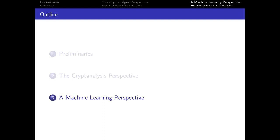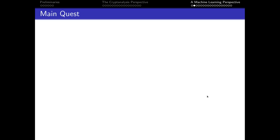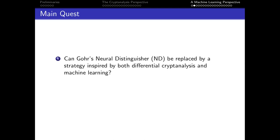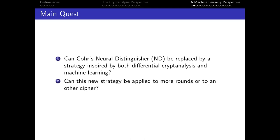Welcome to the second part of the presentation, in which we will focus on exploring the neural distinguisher from a machine learning perspective. In this part, we aim to explore two questions. The first is: can Gohr's neural distinguisher be replaced by a strategy inspired by both differential cryptanalysis and machine learning? The second is: can this new strategy be applied to more rounds or to another cipher? To answer these questions, we need first to analyze the neural distinguisher architecture.